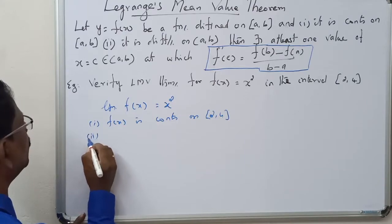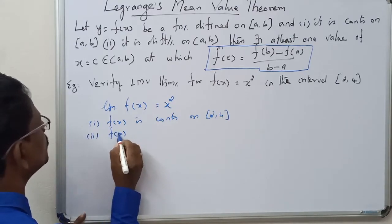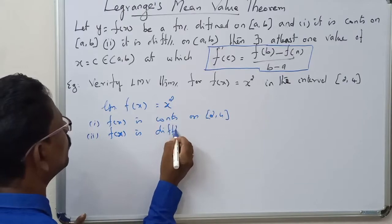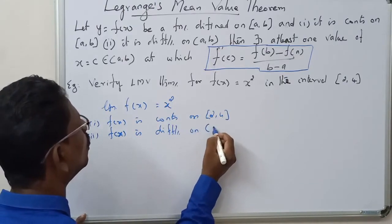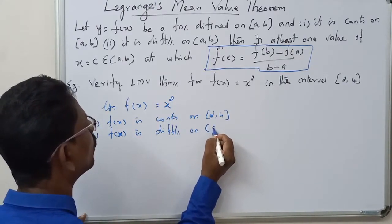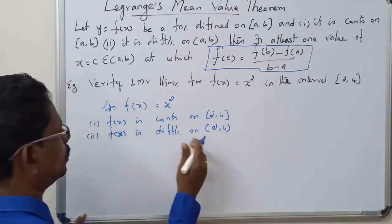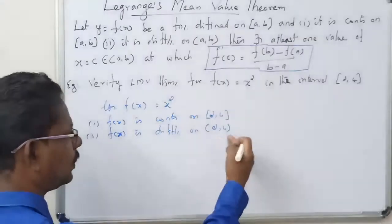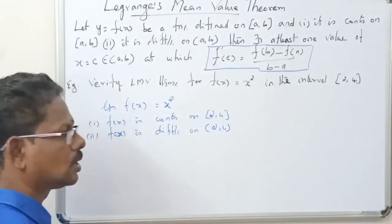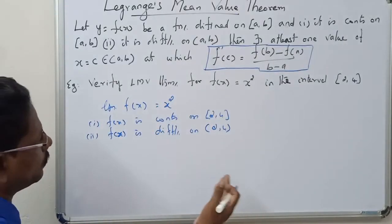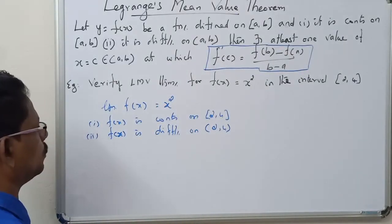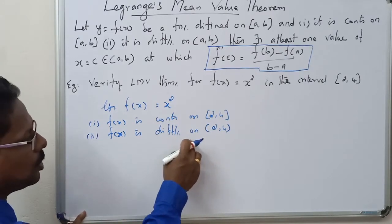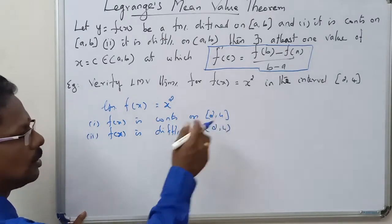Second condition: f(x) is differentiable on open interval (2, 4). We can put any value between 2 and 4 and get corresponding values. Therefore f(x) is differentiable on (2, 4).